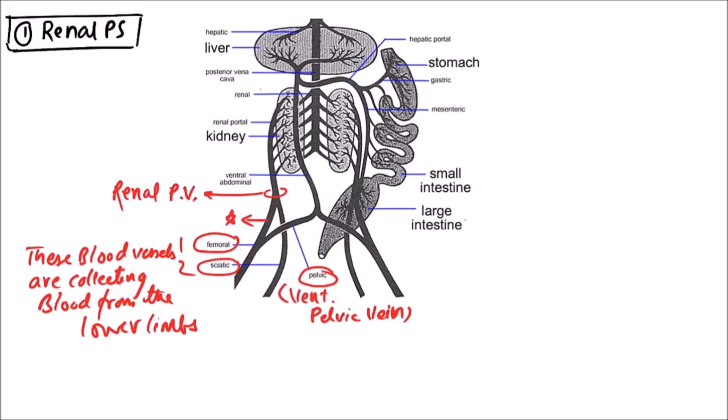This renal portal vein runs along the outer border of the kidney and finally divides into many branches, giving capillaries to the kidney. So this is the renal portal system.